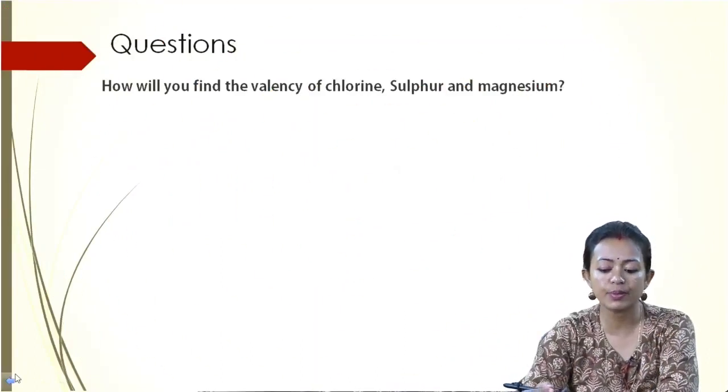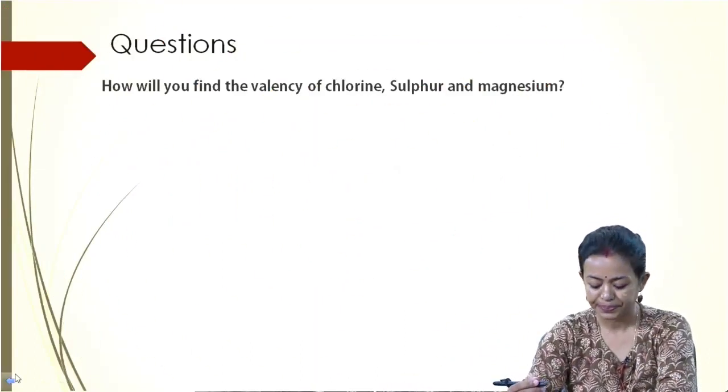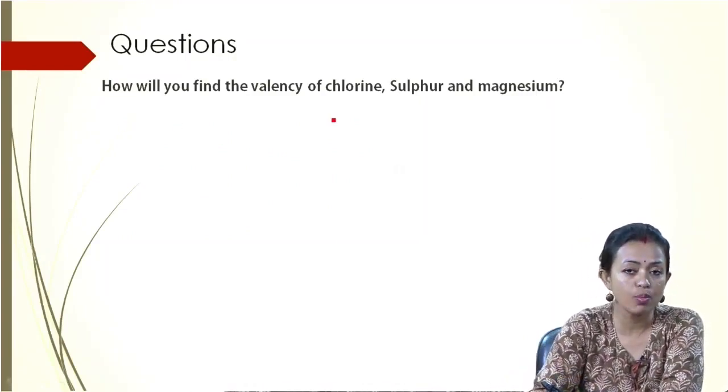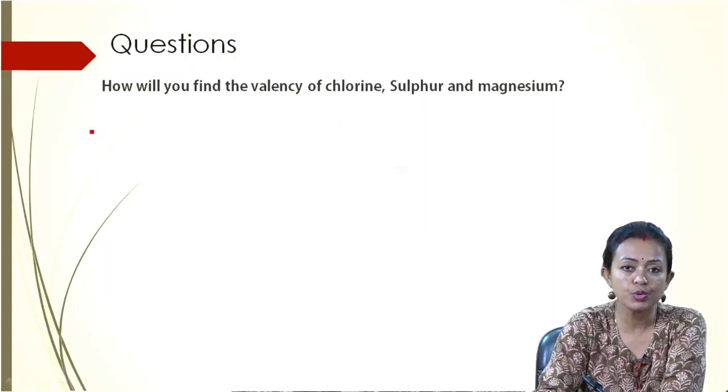How will you find the valency of Chlorine, Sulfur, and Magnesium? For finding out the valency, what do you need? You need to know the number of electrons.